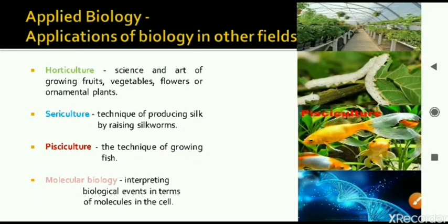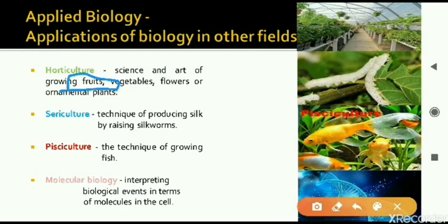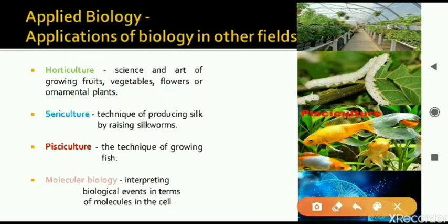Next one is horticulture. Horticulture is actually the science of growing fruits, vegetables, flowers, and different types of ornamental plants. Ornamental means decorational plants. This is related to the commercial aspect because fruits, vegetables, flowers, and ornamental plants all have some money value associated with them. So horticulture is more or less related to things which are connected to the market.